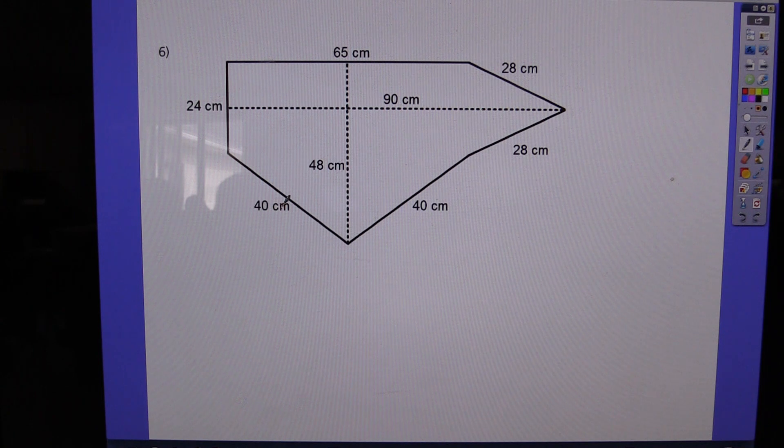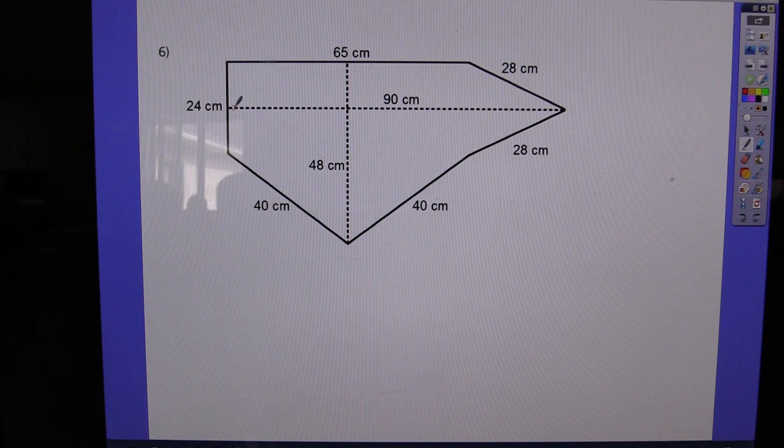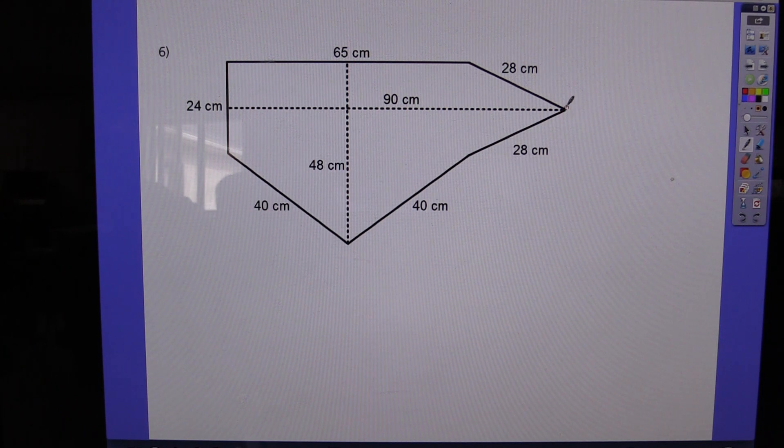Now we do have some measurements given to us. For instance, from here to here we know that this line segment is 65 centimeters. This side here is 28 centimeters, and this side is congruent, 28 centimeters also. This side is 40 centimeters, and this side is 40 centimeters. And here we have a side that's 24 centimeters. We also have a dotted line that goes this way that is 90 centimeters, and we have a perpendicular line that goes from here to here that is 48 centimeters. Some of the data here could be extraneous, things that we don't need to compute in our formulas or find an area, but a lot of it is.